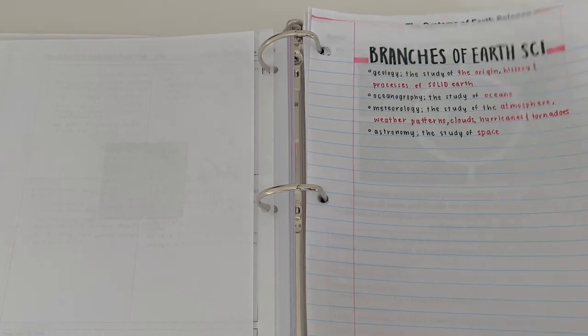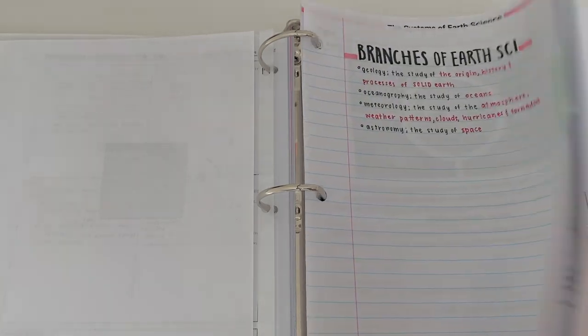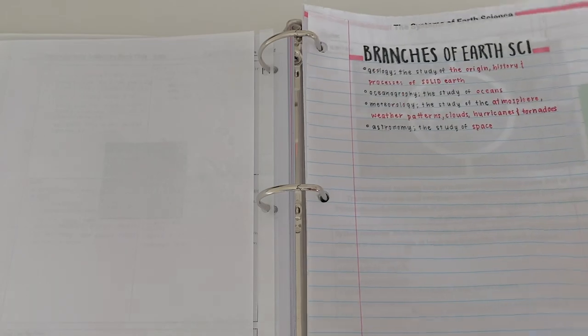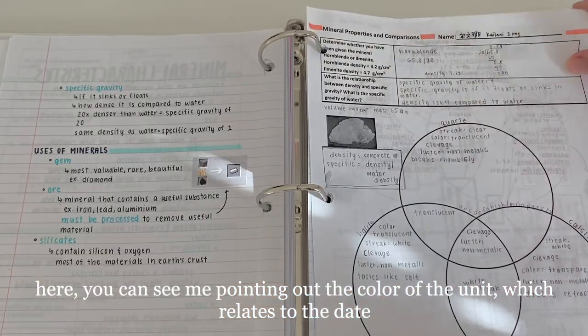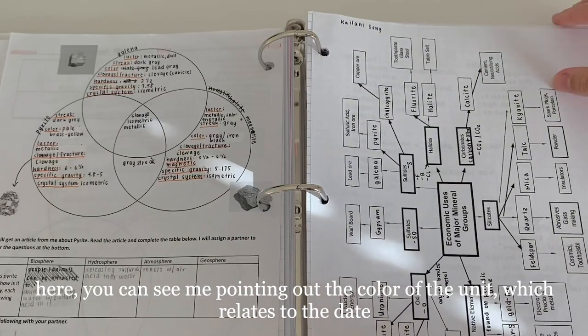Going along with this, the third thing you can do is to put things in order by the date you received them or the date you wrote or made them. If I received something on January 11th, I would put it after something I received on January 10th. This way, I can easily flip through the pages and find whatever I have to without any struggle.